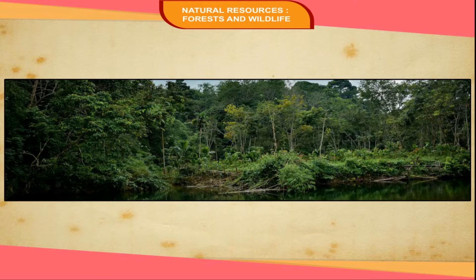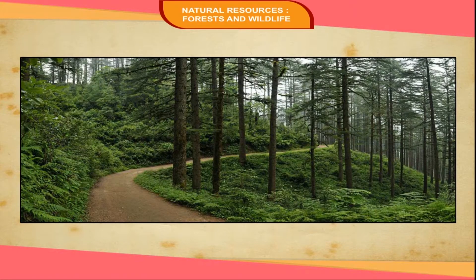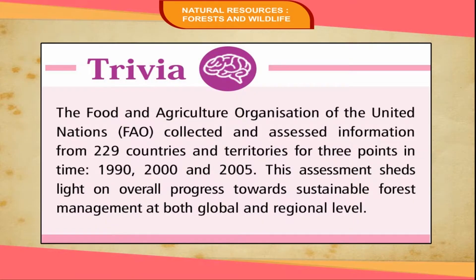Large-scale planting of trees — afforestation — is another important step. Forest fire is another cause of forest depletion which needs to be controlled, and quarrying should also be discouraged. Trivia: the Food and Agriculture Organization of the United Nations (FAO) collected and assessed information from 229 countries and territories for three points in time: 1990, 2000, and 2005, shedding light on progress towards sustainable forest management at global and regional levels.